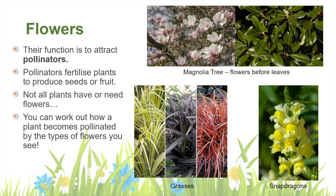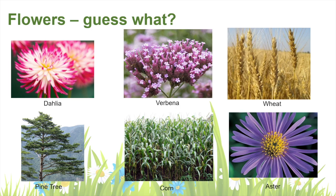What about plants with no bright coloured or smelling flowers? Plants without obvious, bright and attractively smelling flowers — like the grasses shown here — are usually wind pollinated, meaning that the wind moves the pollen and they don't need animals or colours or smells. The plants with flowers — the dahlia, verbena and aster — are animal pollinated, which is why they have bright flowers. And then we have the plants without obvious flowers — pine trees, corn and wheat — which are wind pollinated and therefore don't need bright flowers to attract pollinators.